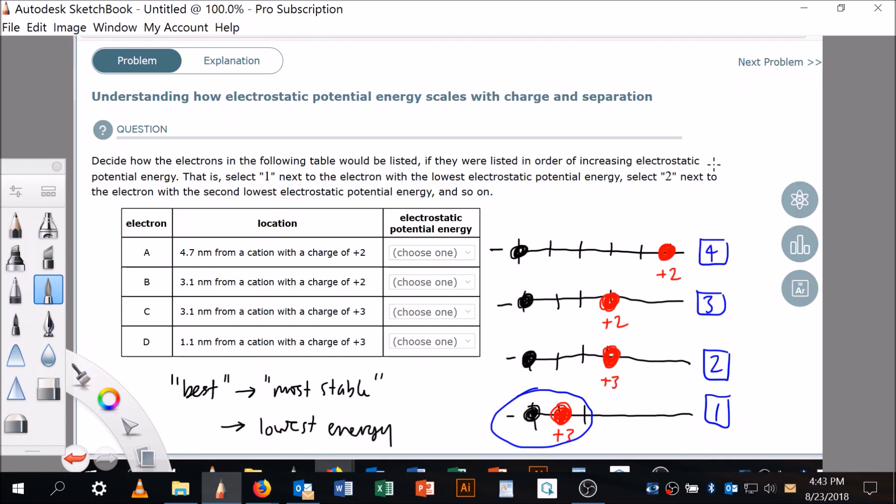So that's how they scale with charge and separation. The higher the charge, the more they want to be together if they're opposite in sign. And the closer they are, the happier they are or the more they want to be together if they're opposite in sign. And of course, the converse is true for all those that are like charges. All right, hope that's helpful.